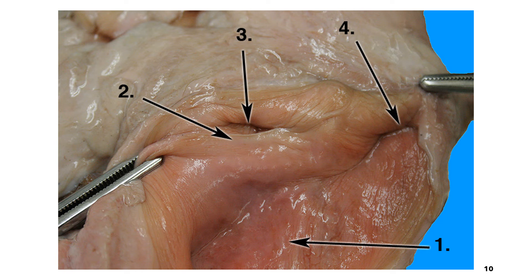Here is another view of the structures that can be found in the Mare posterior vagina. Number one again represents the inner surface of the posterior vagina. Number two is the vulvovaginal sphincter. Number three is the opening to the anterior vagina. And number four is the urethra.